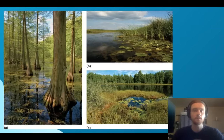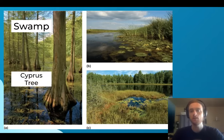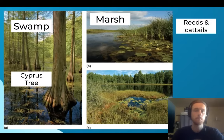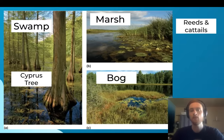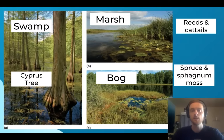Here we have three examples of different types of freshwater wetlands. Swamps feature cypress trees, a type of coniferous tree uniquely adapted to survive in submerged soils. Marshes also have reeds and cattails, which like the cypress tree are uniquely adapted to survive with their roots totally submerged in water. Finally, a bog is characterized by extremely acidic soil, and we have trees like the spruce tree and sphagnum moss that are uniquely adapted to survive in these very acidic soils. In each type of wetland, the plant species are uniquely adapted to those conditions.